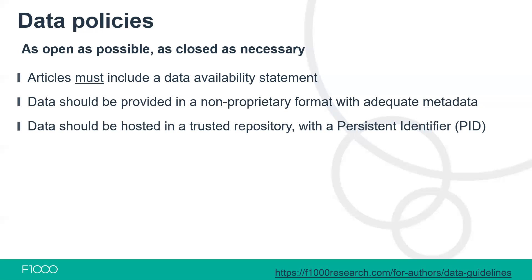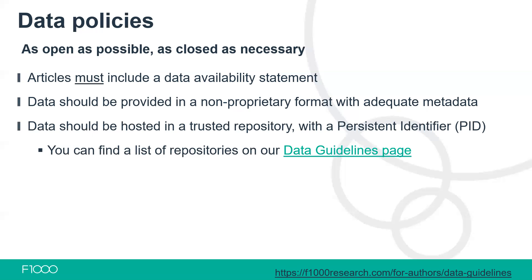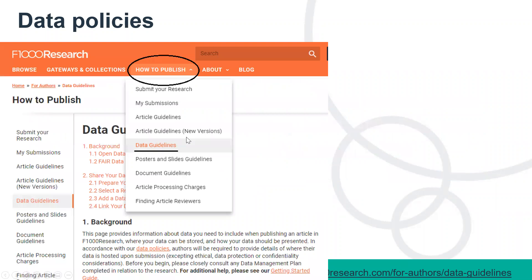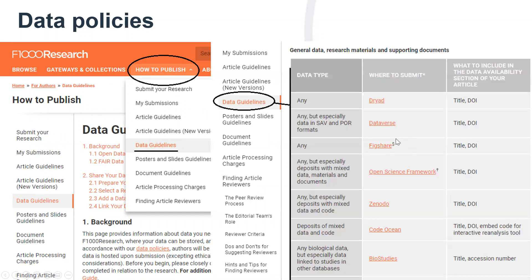The data should be hosted in a trusted repository with a persistent identifier — not, for example, on a blog that may disappear in six months. You can find examples of trusted repositories on our data guidelines page. Data should be published under a Creative Commons Zero license where it's safe and legal to do so, meaning other researchers can use it without legal or financial barriers. On our F1000 Research data guidelines webpage, we have a long list of trusted repositories, explaining what kinds of data each accepts — for example, some only accept genomic data, while others like Dryad accept any kind. Each repository has a link, and we also provide guidance on what to include in your data availability statement.